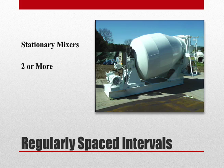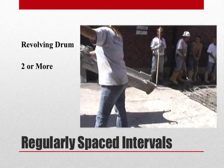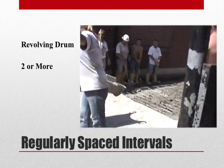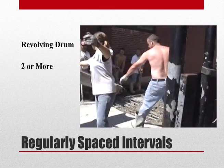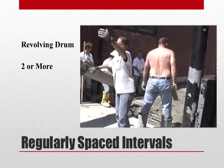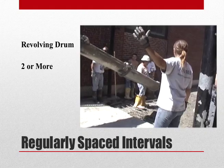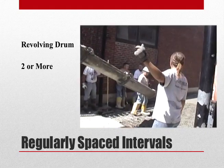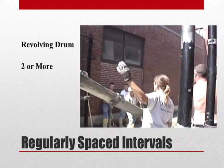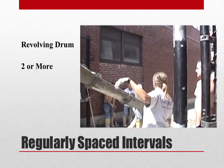When sampling from a stationary mixer, two or more portions are obtained at regularly spaced intervals. When sampling from a revolving drum mixer, the same is true — two or more portions at regularly spaced intervals.